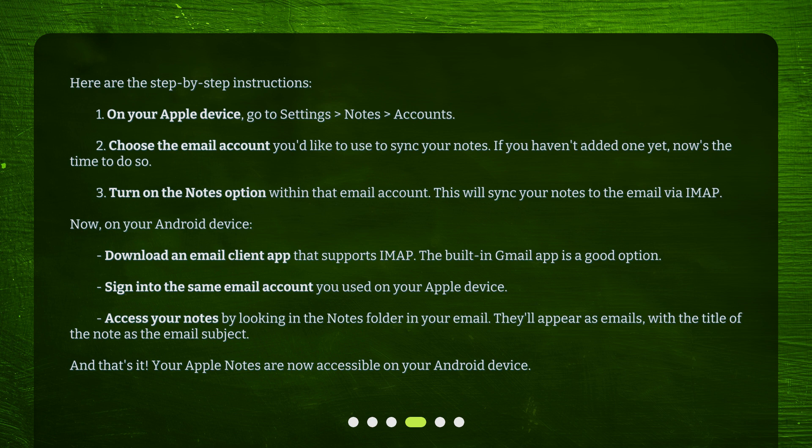Now, on your Android device, download an email client app that supports IMAP — the built-in Gmail app is a good option. Sign into the same email account you used on your Apple device. Access your notes by looking in the Notes folder in your email. They'll appear as emails, with the title of the note as the email subject. And that's it — your Apple Notes are now accessible on your Android device.